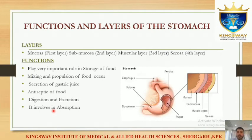Now we will study the anatomy and physiology of the stomach. The stomach has four layers: mucosa, submucosa, muscularis, and serosa. The outermost layer is called serosa, and the innermost layer is mucosa, which is in direct contact with food.